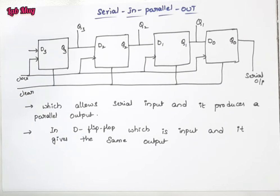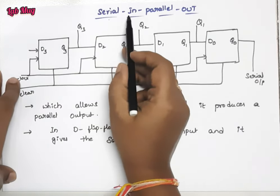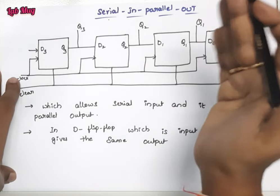Hi everyone, in the previous class we discussed serial in serial out shift register. Now here is another type called serial in parallel out shift register. The data is coming as serial input, we process it serially.